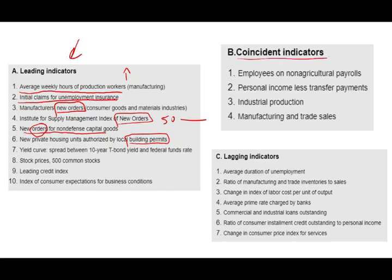Coincident indicators tell you what's going on right now. Lagging indicators come after the fact — for example, average duration of unemployment tells us the duration after six or eight weeks, which is after the fact. The ratio of manufacturing and trade inventories to sales — basically, how are we doing in terms of inventory turnover — is also a lagging indicator. We have both the sales and the inventory data after the fact, so these indicators confirm what happened after the cycle occurred.